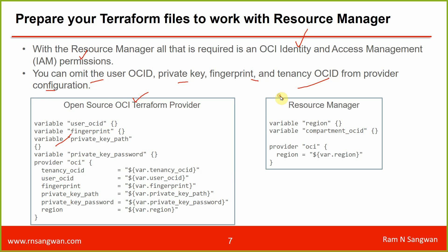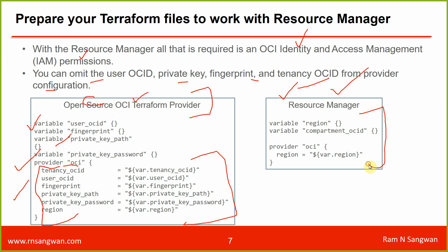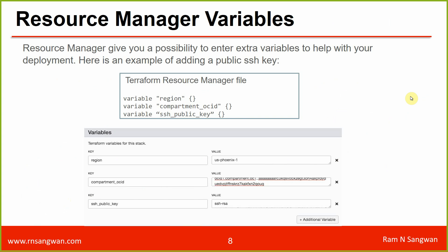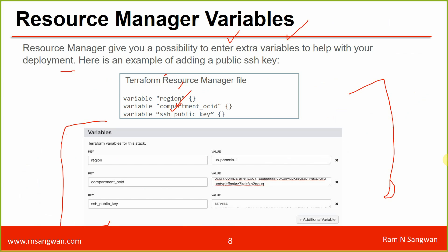When using Resource Manager you are already on OCI, so you don't need those authentication details. In a local setup you provide tenancy OCID, user OCID, fingerprint, and so on. With Resource Manager you specify only the region and compartment ID — it fetches everything else. Resource Manager also lets you enter extra variables to help with deployment, such as region name and compartment OCID, declared in the stack's variables panel.